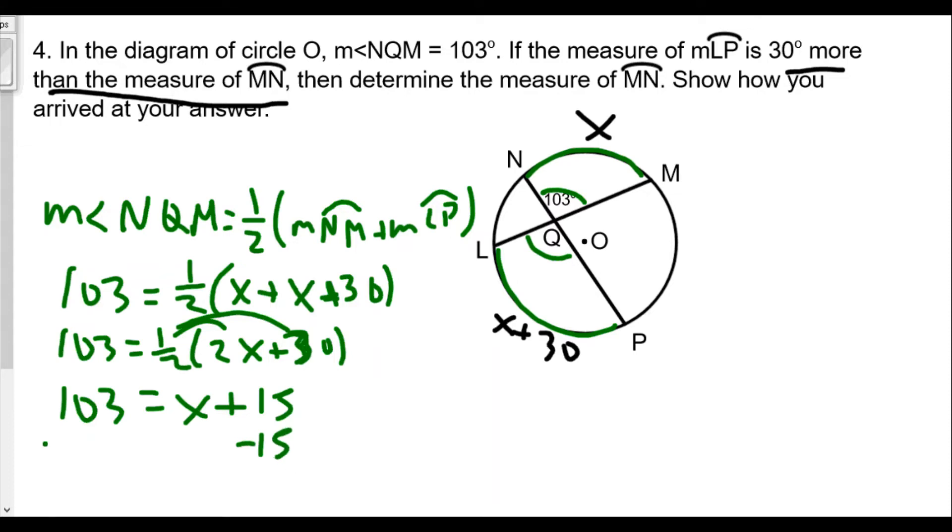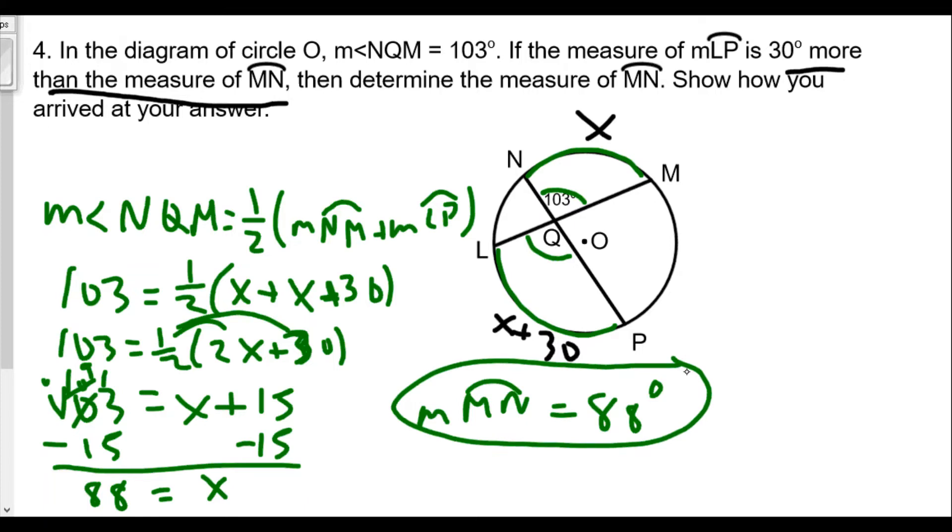Now subtract 15 from both sides. We don't need a calculator in this case. So x is equal to 88 degrees. We know in this case the measure of x was the measure of arc MN, so x equals 88 degrees. Using our information about the relationships, we can solve our problems.